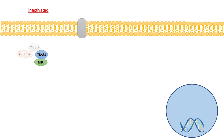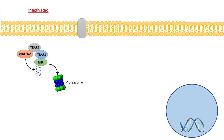TRAF3 is itself bound to another protein, TRAF2, or TNF receptor-associated factor 2. TRAF2 is itself bound to CIAP1 and 2, which is cellular inhibitor of apoptosis 1 and 2. In this inactivated state, CIAP will actually ubiquitinate NIK — the NF-kappa-B-inducing kinase. When NIK gets ubiquitinated, it leads to the proteasomal degradation of NIK, resulting in low levels of NIK in the cell.